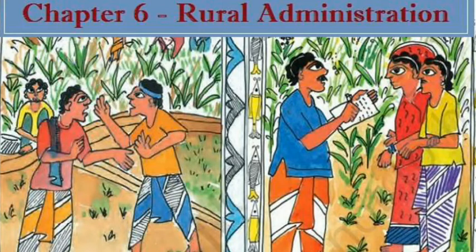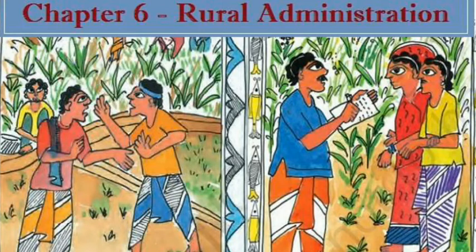District Administration: The District Magistrate or the DM is the highest executive officer at the district level. He or she is responsible for the smooth administration in the whole district, and is also called the District Collector and Deputy Commissioner. There are basically three arms of district administration: law and order; maintenance of land records and collection of land revenue; and maintenance of civic rights and development. Let's take a brief look at their functioning.